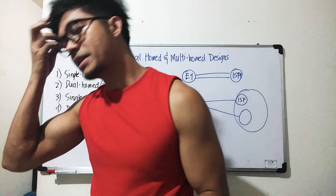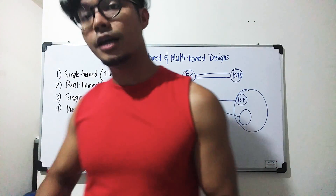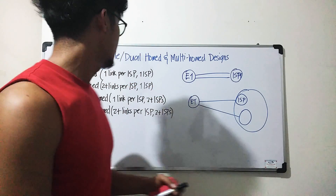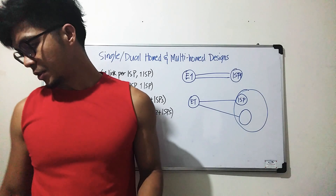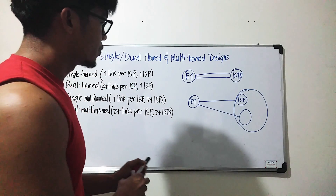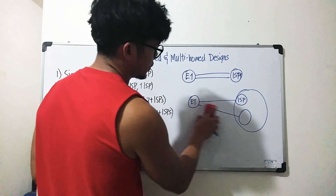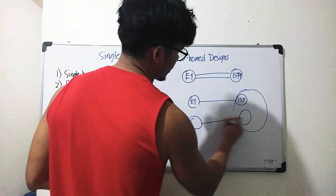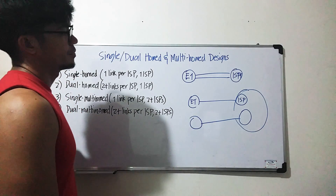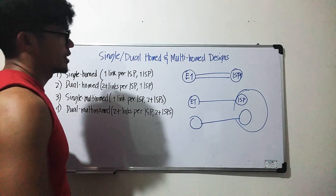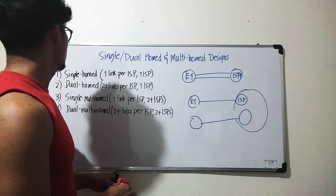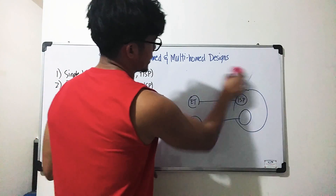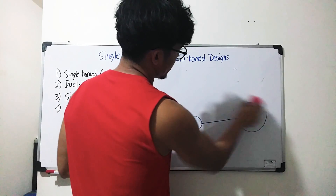So basically, dual-homed is two links connected to a single ISP. We can also have two routers on the enterprise side. Those are examples of dual-homed designs.